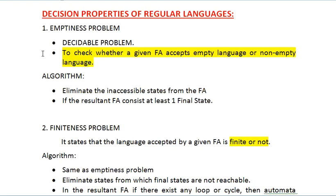So those are the four decision properties of a regular language: the emptiness problem, the finiteness problem, the equivalence problem — for which I suggest referring to the equivalence of two finite automata lecture — and the membership problem. Hope you have understood both the closure properties and the decision properties, as these are very important for university examinations and competitive exams. In the next video we will cover the pigeonhole principle, which is the origin of these properties. Thank you for watching.